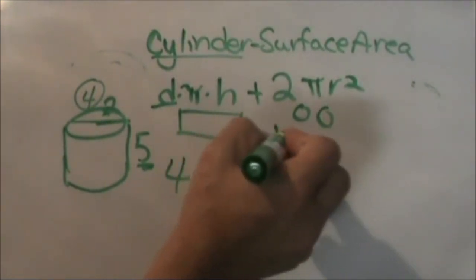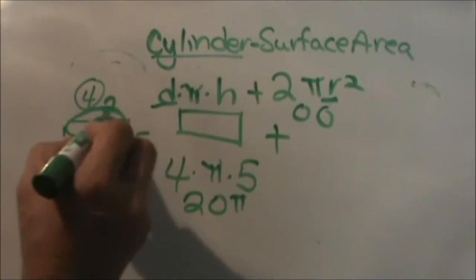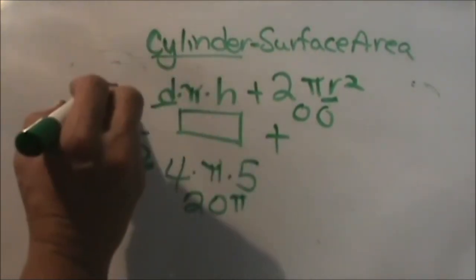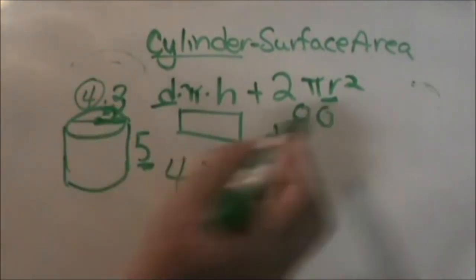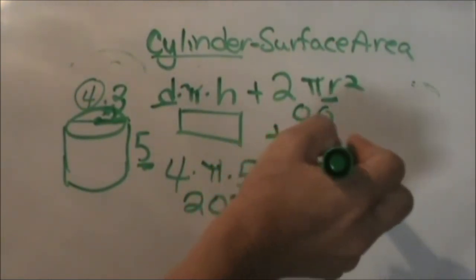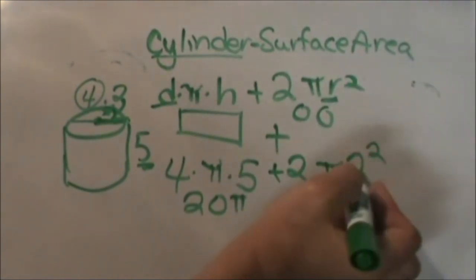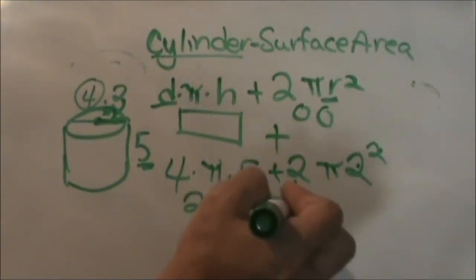Now let's add our bases. Now we need our radius, so let's go back. We had 2 for the radius. So we're going to take 2 times pi times the radius, which is 2 squared, so that's 4. 4 times 2 is 8 pi.